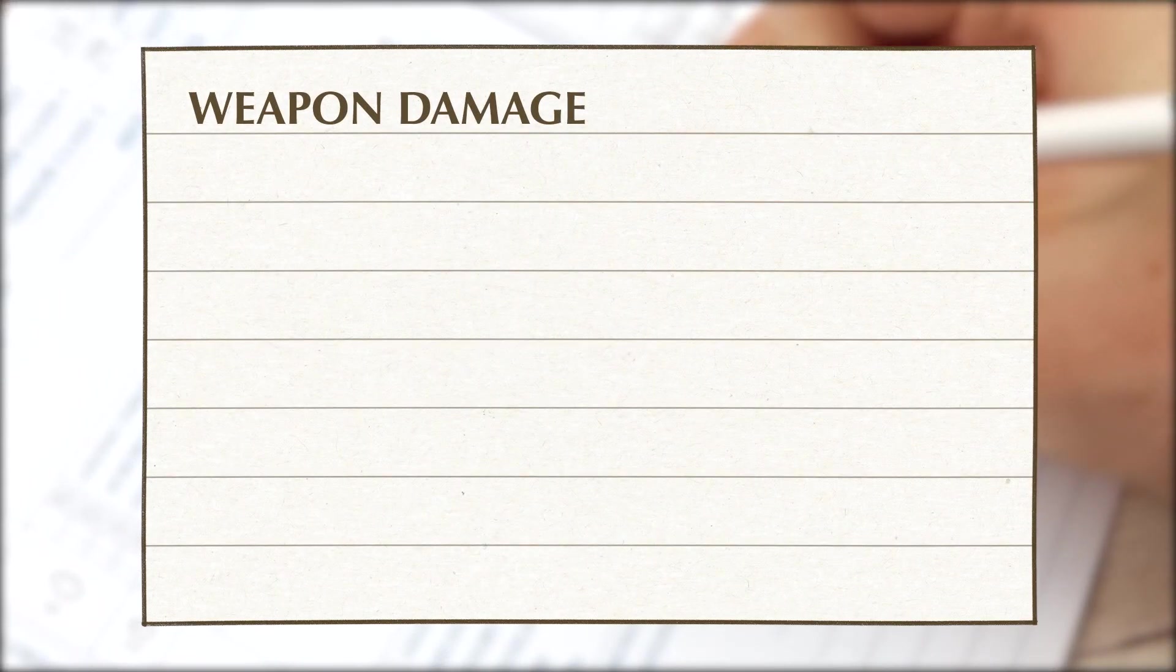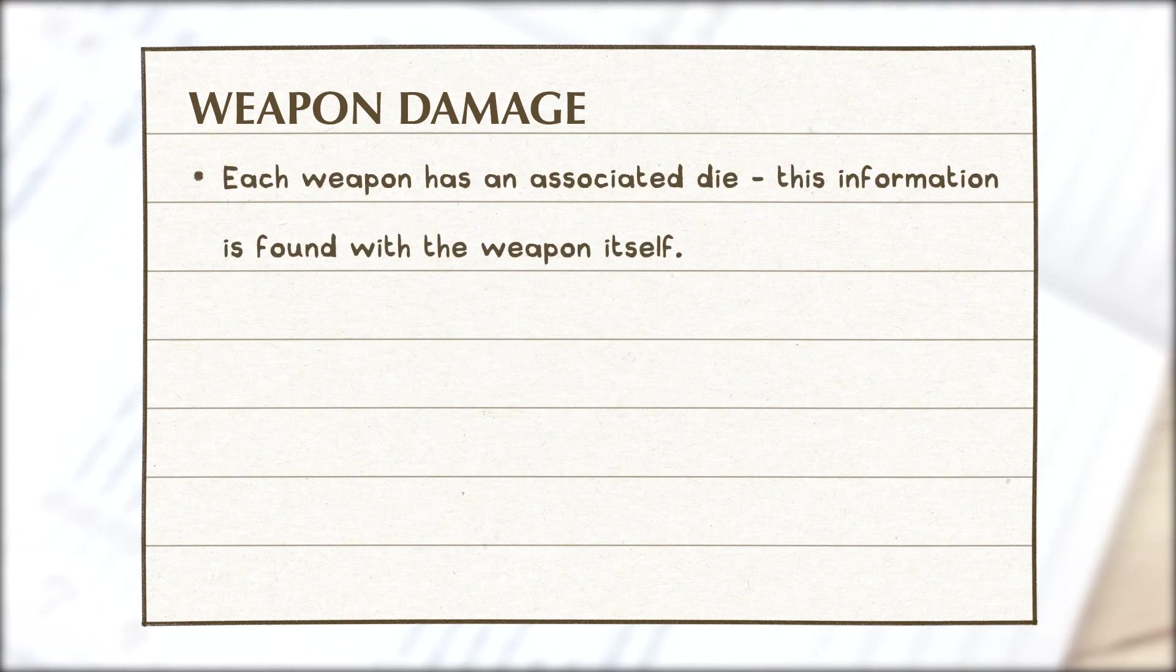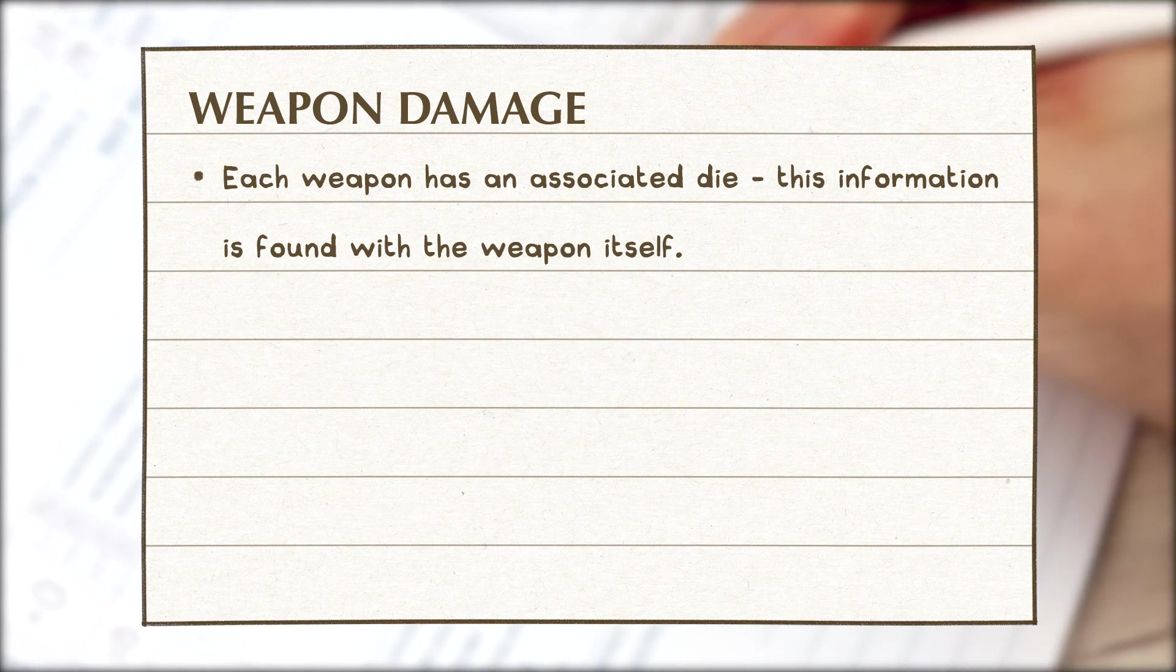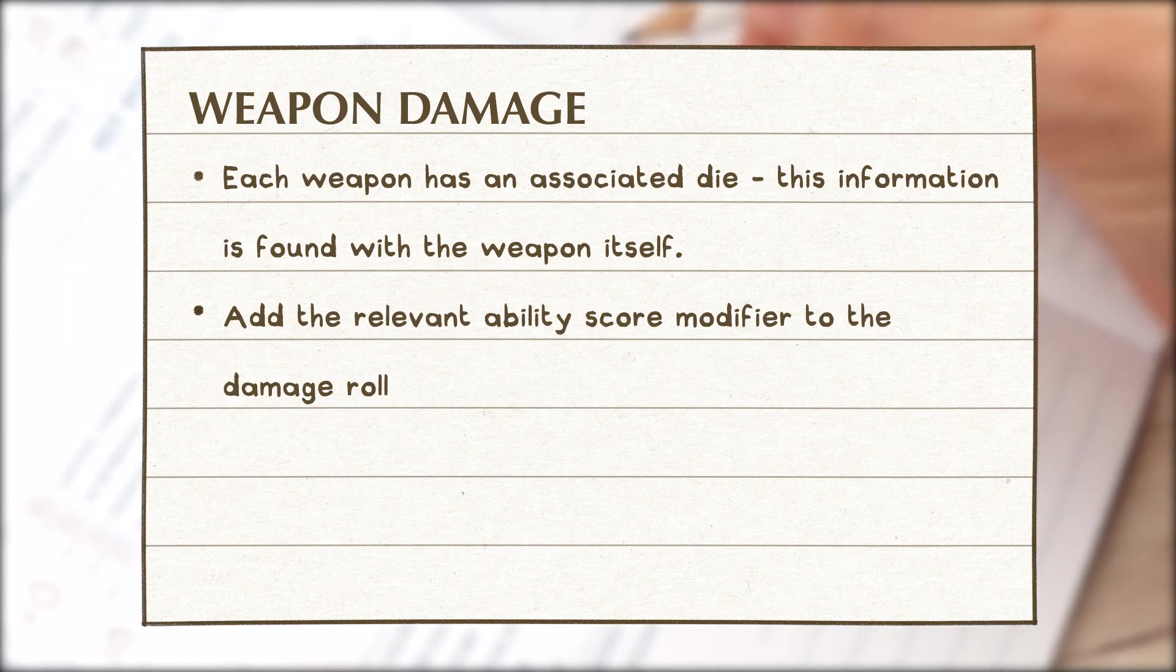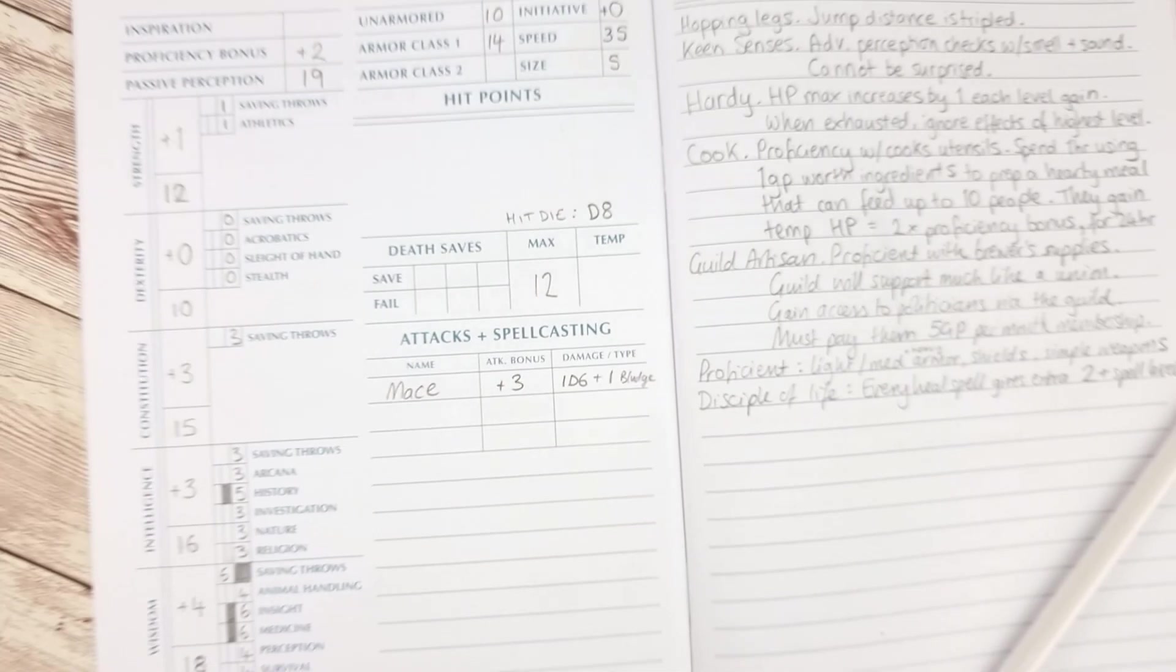For the weapon damage this will be the weapon's damage die which can be found with the info for the weapon plus your strength or dexterity modifier whichever is relevant. The damage type can also be found with the information for the weapon. And overall your character sheet should now be finished.